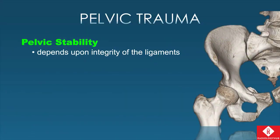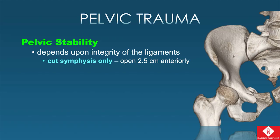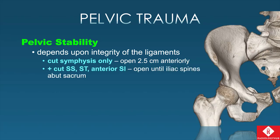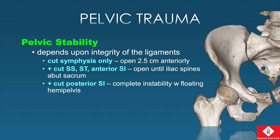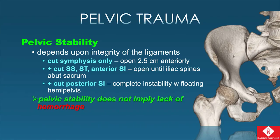Pelvic stability really depends on integrity of the ligaments. If you cut only the pubic symphysis, you can spread open about two and a half centimeters anteriorly — that's still a stable situation. But if you also disrupt the pelvic floor ligaments — our sacrospinous and sacrotuberous ligaments — as well as the anterior SI joints, you open one hemipelvis until the iliac spines are above the sacrum posteriorly. Adding posterior SI joint ligament disruption creates complete instability with a free-floating hemipelvis. Importantly, pelvic stability does not imply a lack of hemorrhage — the two are largely independent.